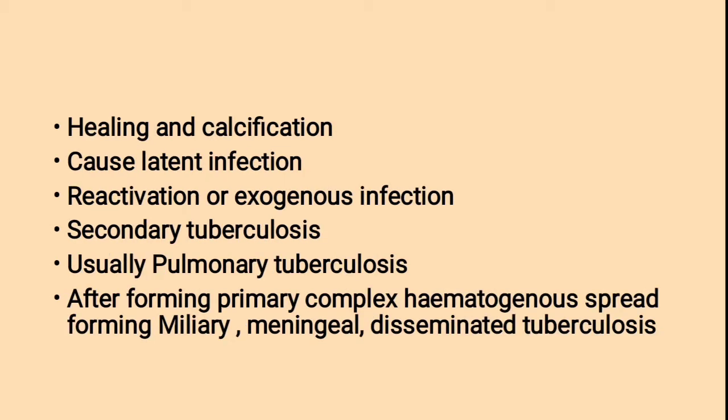Then healing and calcification forming cause latent infection — latent means something hidden. Then reactivation or exogenous infection forms secondary tuberculosis, which is usually pulmonary tuberculosis. After forming the primary complex, hematogenous spread — hematogenous means spread with blood — then forming miliary, meningeal and disseminated tuberculosis.